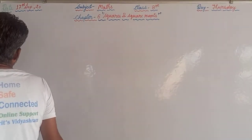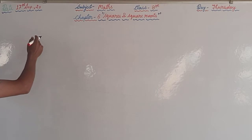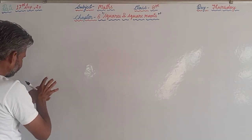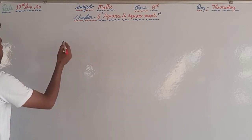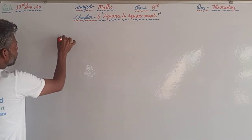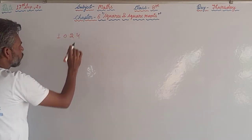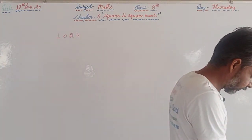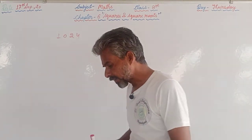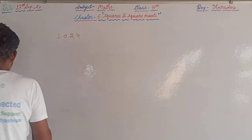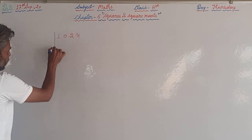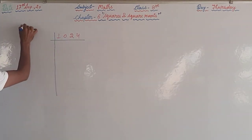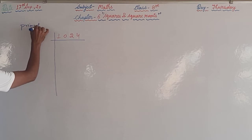First, we will take the number 1024. We have to check whether this number is a perfect square or not. We will use the prime factorization method.